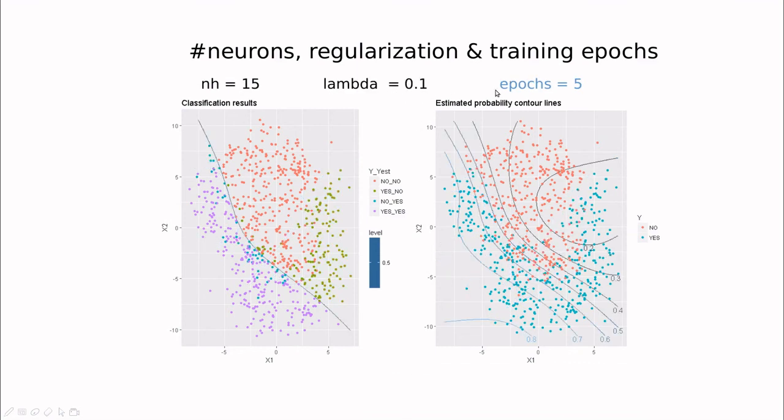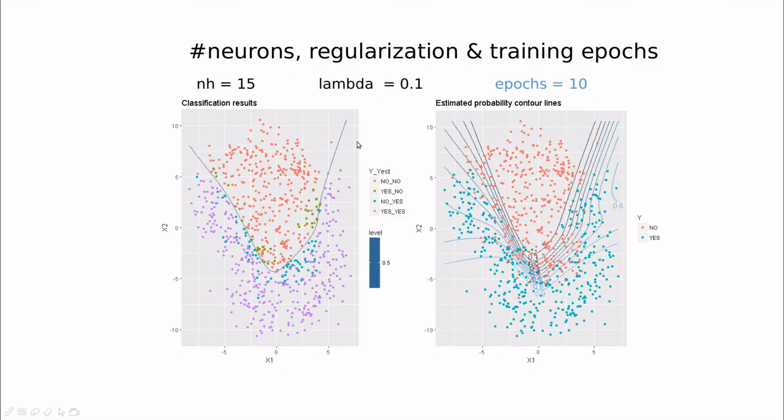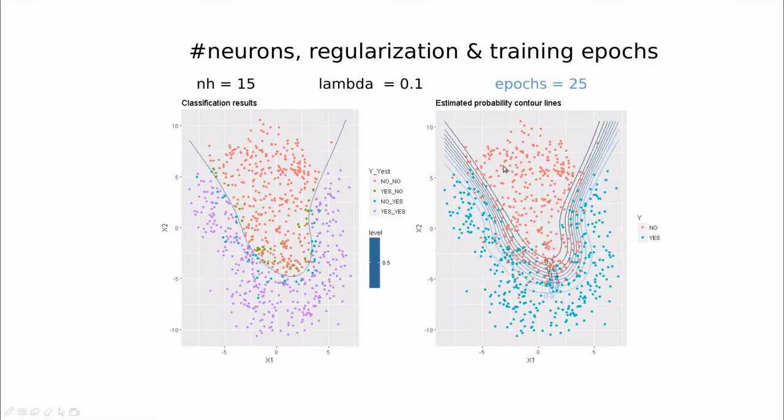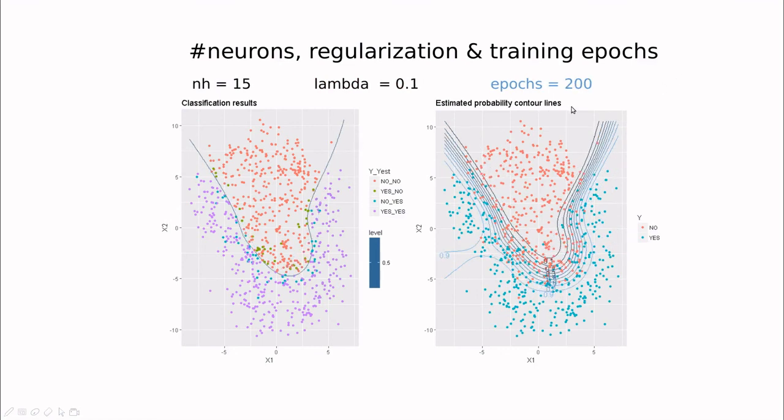So when you don't have any penalty, the best thing that you can do is to stop early. What if we add some penalty? Well, at the beginning, we need more time in order to have a good convergence. But the good thing is that this line is bad, but after 10, you have this boundary, which is pretty good.